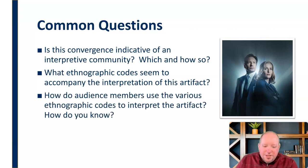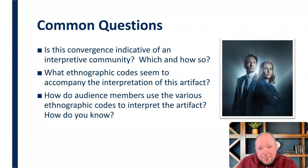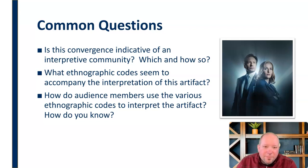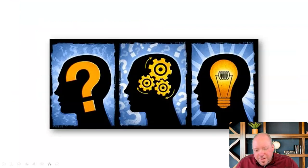How do audience members use the various ethnographic codes to interpret the artifact? We would look for breadcrumbs — lots of things. You had to pay very specific attention to how things were phrased, what people said and what they didn't say. Even things like the time on clocks tended to be important. But if you were a member of that culture, you would know those things. If you weren't a part of that culture, none of that would make any sense to you — you really had to be a part of that culture.